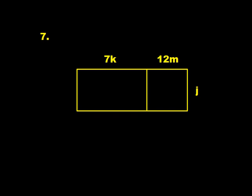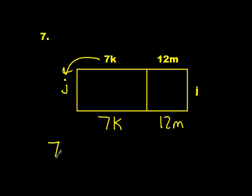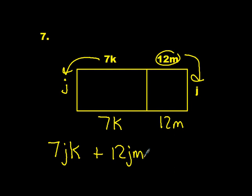Number 7 involves variables 7k, 12m, and j — it is like an area model. Understand that opposite sides are equal. For the first part, we want 7 times k, so we can put 7jk. Plus 12 times j, so we can put 12jm. Order doesn't matter. The answer is 7jk plus 12jm.